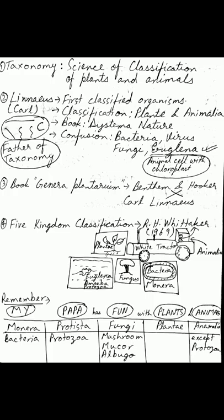Euglena is a protozoa — a unicellular organism with no cell wall but it has chloroplasts. So it does not have a cell wall, which is a property of animal cells, but it has chloroplast, which is a property of plant cells. Therefore Euglena could be considered a plant as well as an animal, causing confusion in the two-kingdom classification.